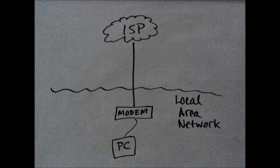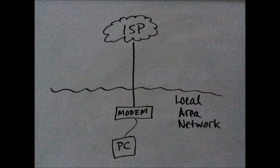Today most people don't have dial-up modems anymore, but they still have some sort of modem — either a cable modem or a DSL modem. Back then, your internet service provider was the local telephone company. You dialed a number and their dial-up server would connect you to the internet. Prior to 1984, telecom was a monopoly, and AT&T — American Telephone and Telegraph — was basically your only option for telephone service.